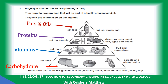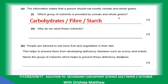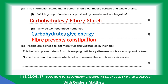From this table, let's see the questions. The information states that a person should eat mostly cereals and whole grain. Which group of nutrient is provided by cereals and whole grain? Energy-giving food — that is carbohydrate. Carbohydrate, fiber, or starch — any of them can serve as the answer. Why do we need these food nutrients? Carbohydrate gives energy; fiber prevents constipation.